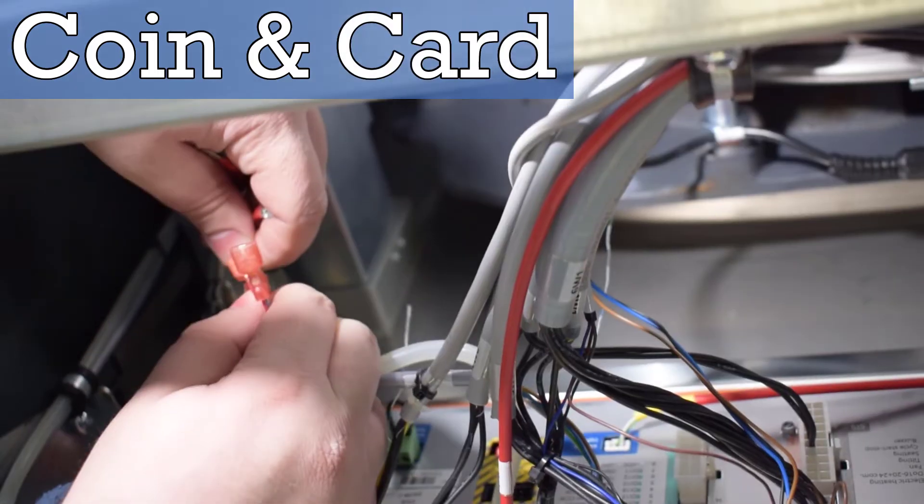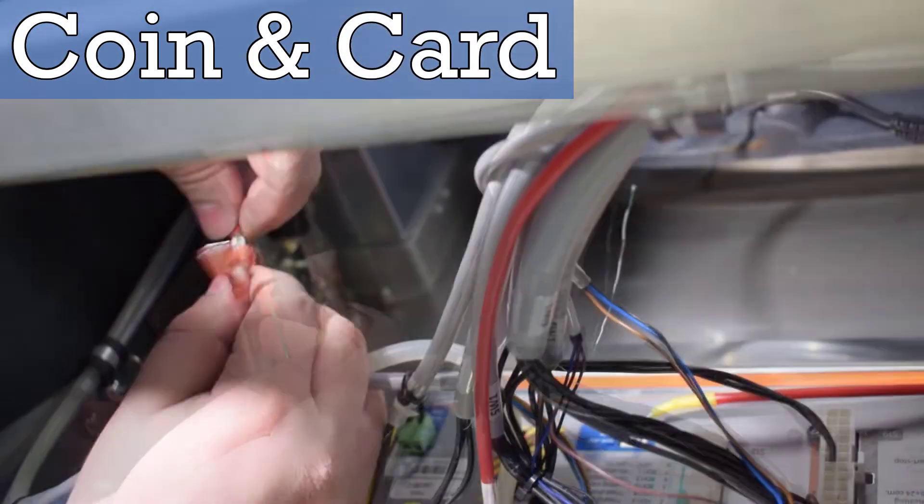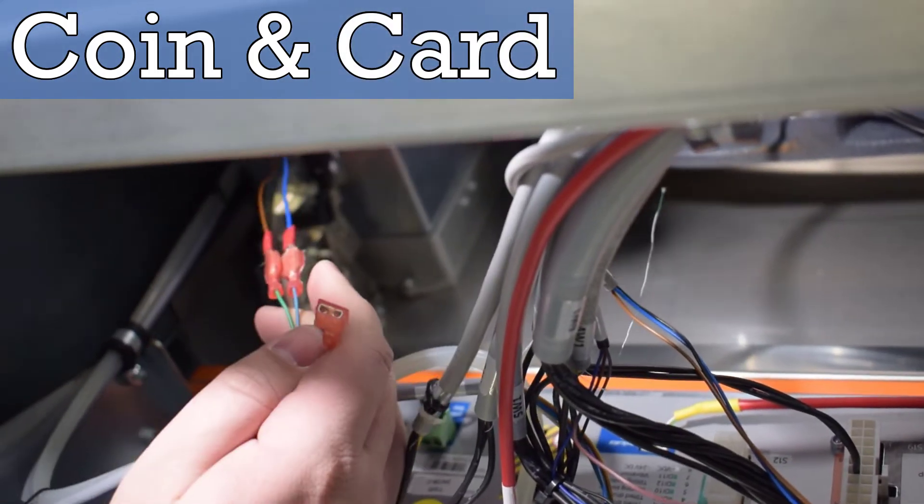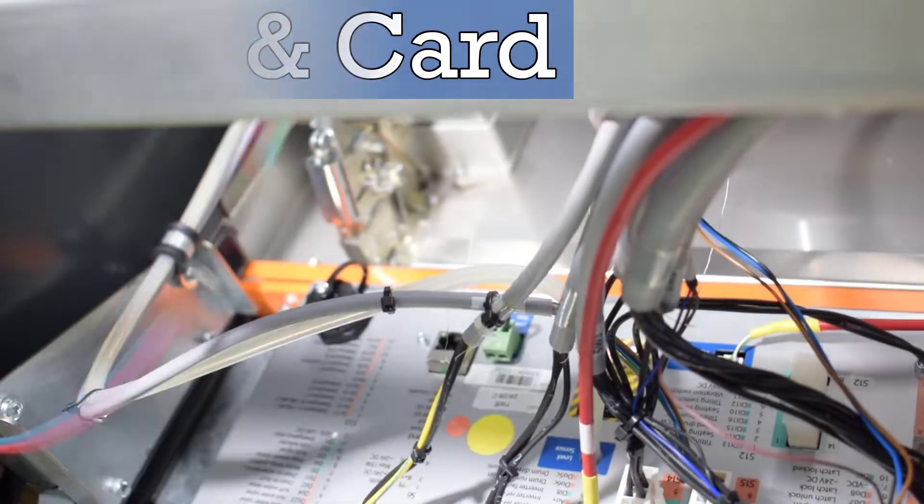For coin and card setups, connect the coin sense harness to the now available coin drop connectors, pairing the brown wire to the green wire, blue wire to blue wire, and red wire to red wire.